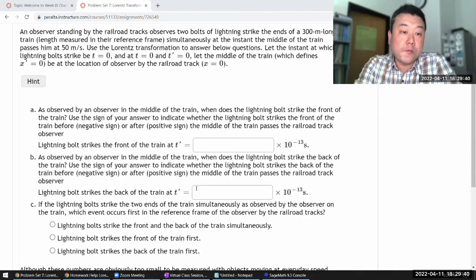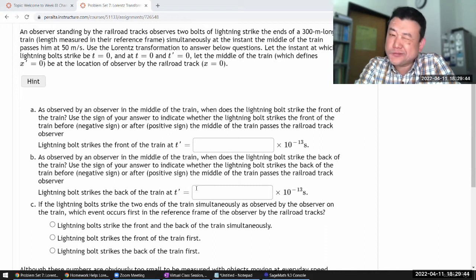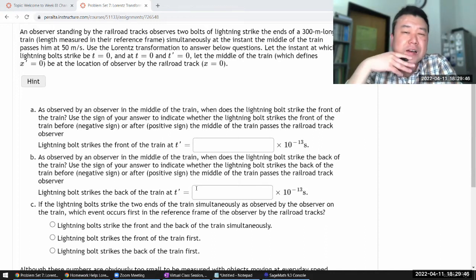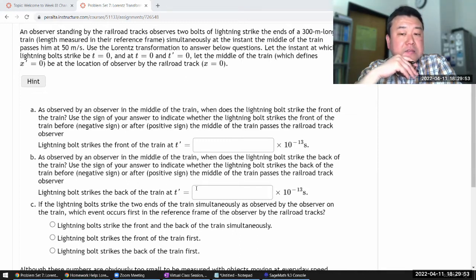So it says an observer standing by the railroad tracks observes two bolts of lightning strike the ends of a 300 meter long train simultaneously at the instant the middle of the train passes him at that speed, 50 meters per second.